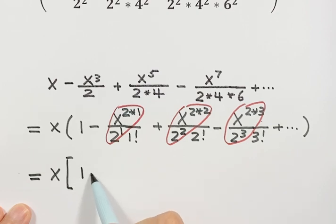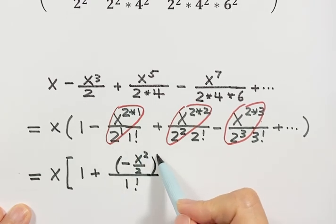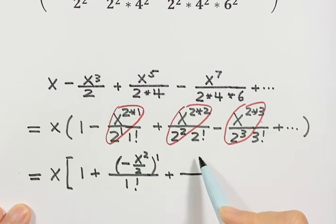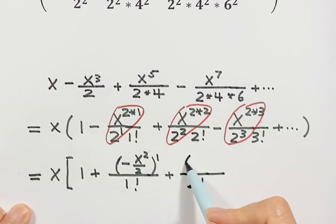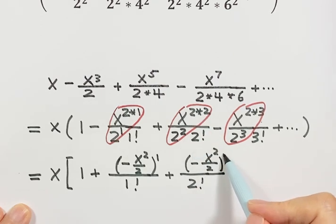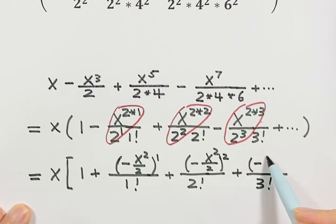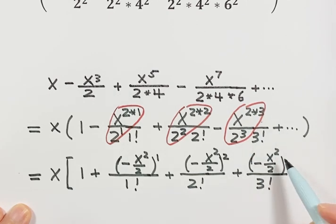So here we have 1 plus: on the bottom that's 1 factorial, on top that's negative x squared over 2 to the power 1. Then the second term: bottom is 2 factorial, on top that's negative x squared over 2 to the power 2. Then the third term: bottom is 3 factorial, on top that's negative x squared over 2 to the power 3.